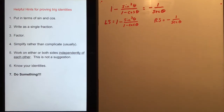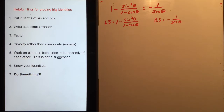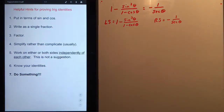Let's prove some trig identities. Here's a list of helpful hints. First: put everything in terms of sine and cosine — that's really useful because all these trig ratios can be expressed in terms of sine and cosine. It's better to compare apples to apples. Second: write as a single fraction. Third: factor — factoring is very important because in a fraction you can only cancel factors.